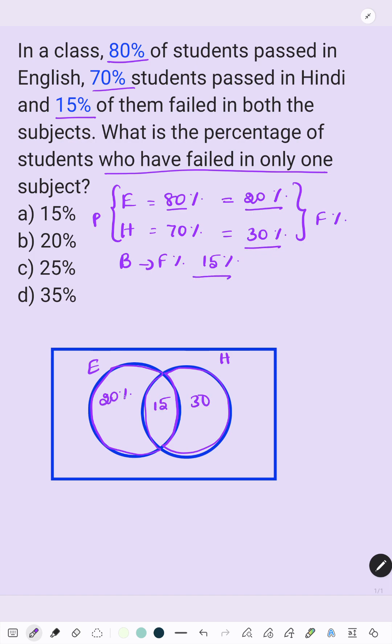Both is 15%. So, 20 minus 15 equals 5. 30 minus 15 equals 15. So, add this. We get the answer. That is 15 plus 15 equals 20%. Option B is the answer.